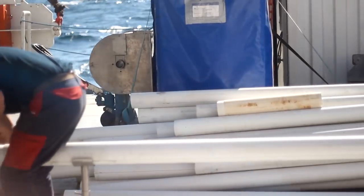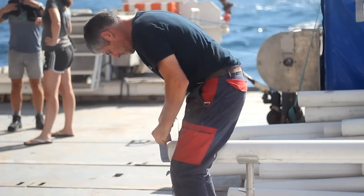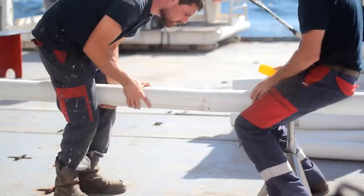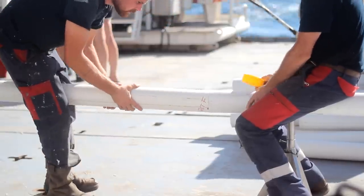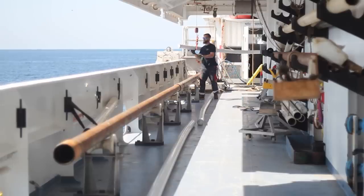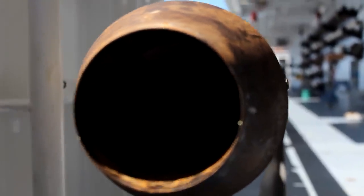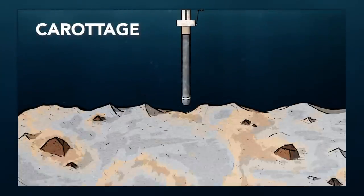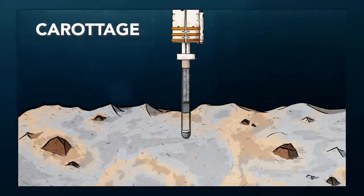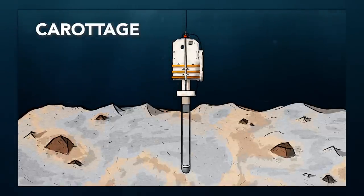Ce matin, le navire se prépare à réaliser une nouvelle opération, récolter des carottes. Alors, rien à voir avec un quelconque légume. Ici, nous parlons de faire descendre une gigantesque paille métallique jusqu'au fond de la mer, afin de récolter une colonne de sédiments. Ce prélèvement est alors appelé une carotte, et permet d'aller capturer notre méthane directement sur le fond, qu'il soit sous la forme de bulles ou de glace.